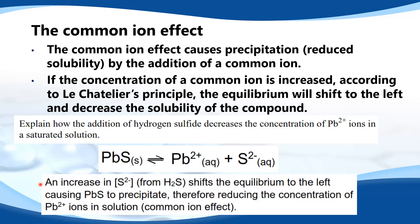An increase in the S²⁻ or sulfide ions from H₂S shifts the equilibrium to the left, causing lead sulfide to precipitate, therefore reducing the concentration of Pb²⁺ ions in solution. And that's known as the common ion effect.